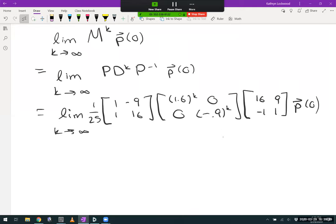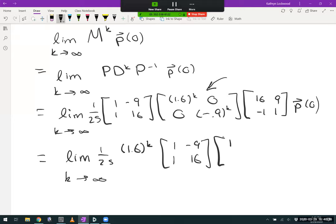Alright. Now, we want to think about what's happening as k tends to infinity. The only place that we see k in here is in this middle diagonal matrix. I'd like to first pull out 1.6 to the k from this matrix. If I factor out 1.6 to the k, I have to pull it out from every single entry of our matrix D to the k. And at one spot, I'll have 1 to the k or 1. 0 stays 0. And then for the 2, 2 position, we'd have negative 0.9 to the k divided by 1.6 to the k. Everything else right now is staying the same.